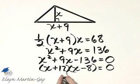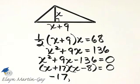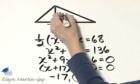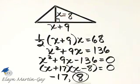Now if I set this factor equal to 0, I'll have negative 17 as a result. If I set this factor equal to 0, I'll have 8. Because we're working with lengths here, we will choose the answer of positive 8 only, and the altitude is 8.